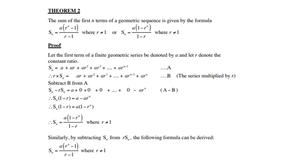Multiply all terms on both sides by r and call it equation B. Then subtract A minus B: Sₙ - r·Sₙ = a, and all the middle terms cancel, leaving -arⁿ as the last term. Take out Sₙ as a common factor on the left, giving Sₙ(1 - r). On the right, take out a as a common factor to get a(1 - rⁿ). Divide both sides by (1 - r) and that gives the formula. Similarly, by subtracting equation A from B instead, we obtain the second formula.